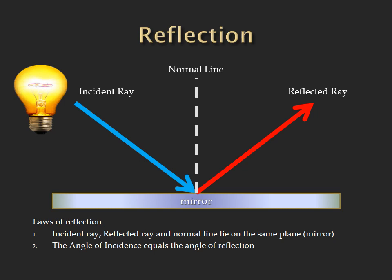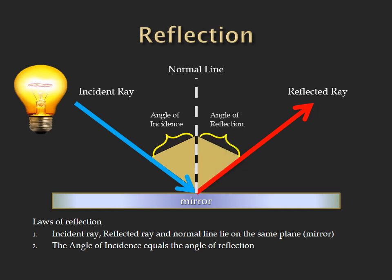Between the incident ray and the normal line forms the angle of incidence, while on the other side, between the reflected ray and the normal line, is the angle of reflection. The second law of reflection states that the angle of incidence equals the angle of reflection. So if the incident ray strikes the mirror at 60 degrees — forming an angle of 60 degrees with the normal line — the reflected ray will also leave at 60 degrees.